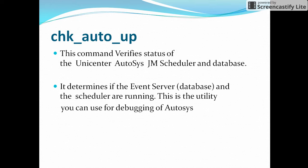The command is check_auto_up. This command is a client utility which is used to find the status of Autosys, whether it is up or not. This command verifies the status of the Unicenter Autosys JM scheduler and the database. It will check both the scheduler as well as the database to determine if the event server and the scheduler are running.